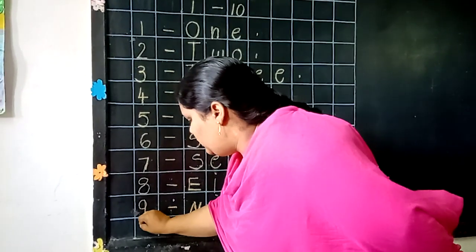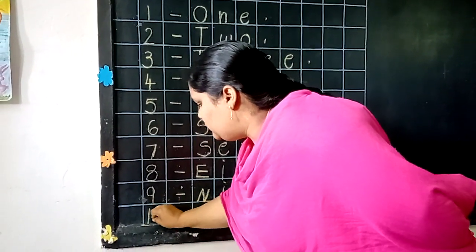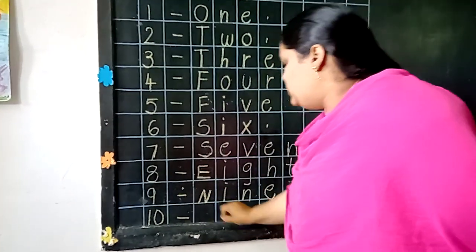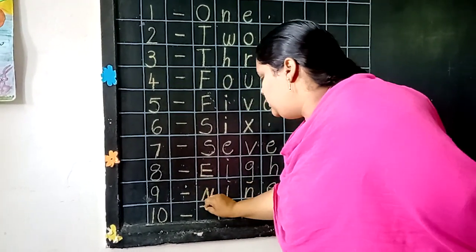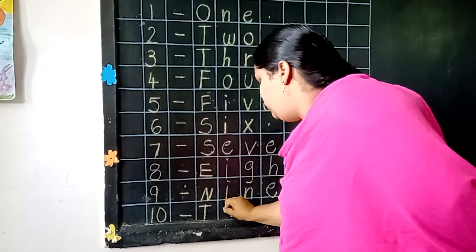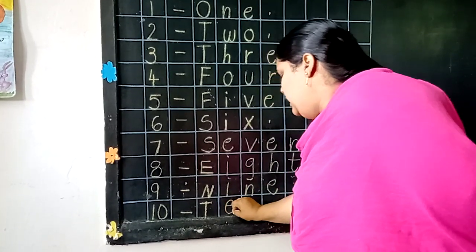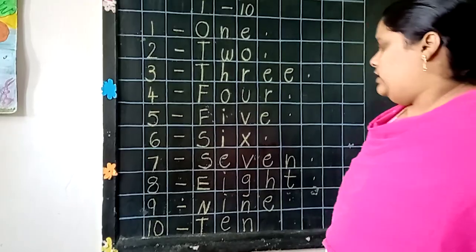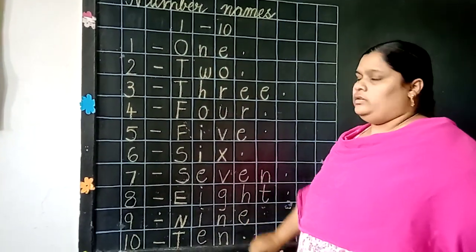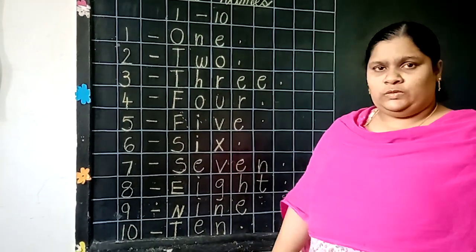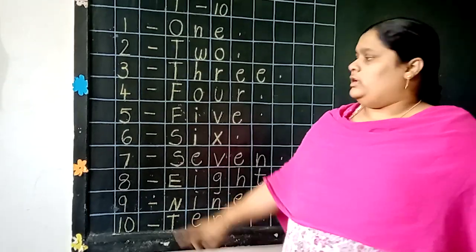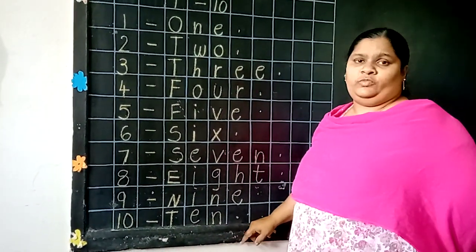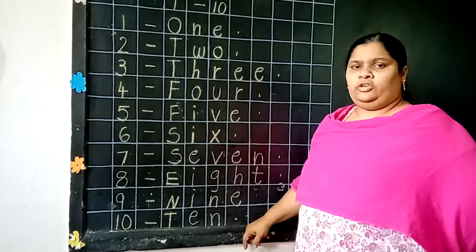Next. 10. Very good. What is the spelling of 10? Children, T, E, N. 10. Okay. Practice well at your home, children. Number names 1 to 10 — practice well at your home, children. Okay. Thank you. Bye.